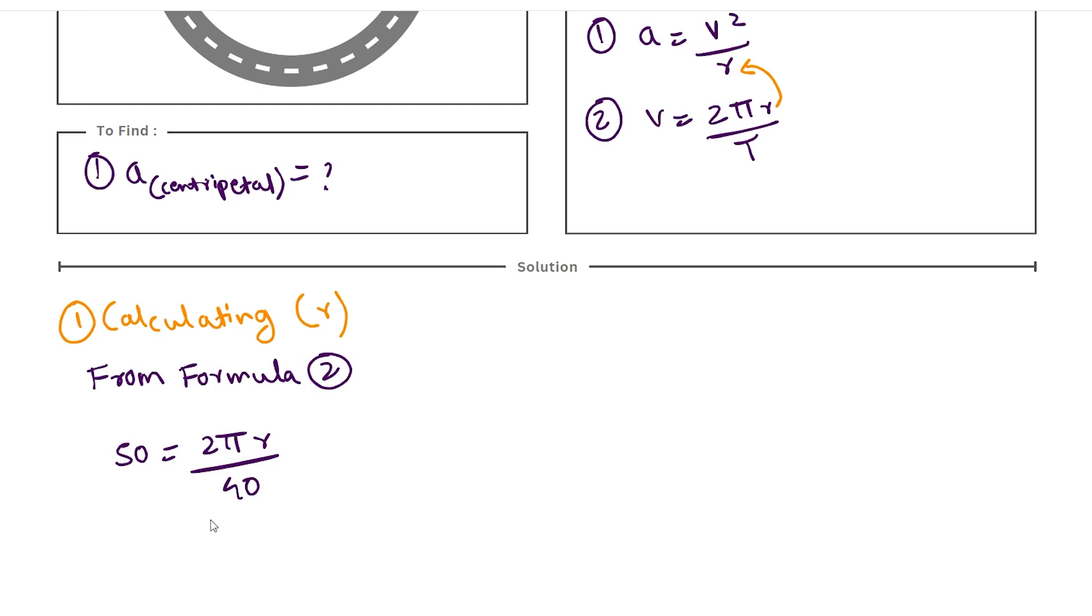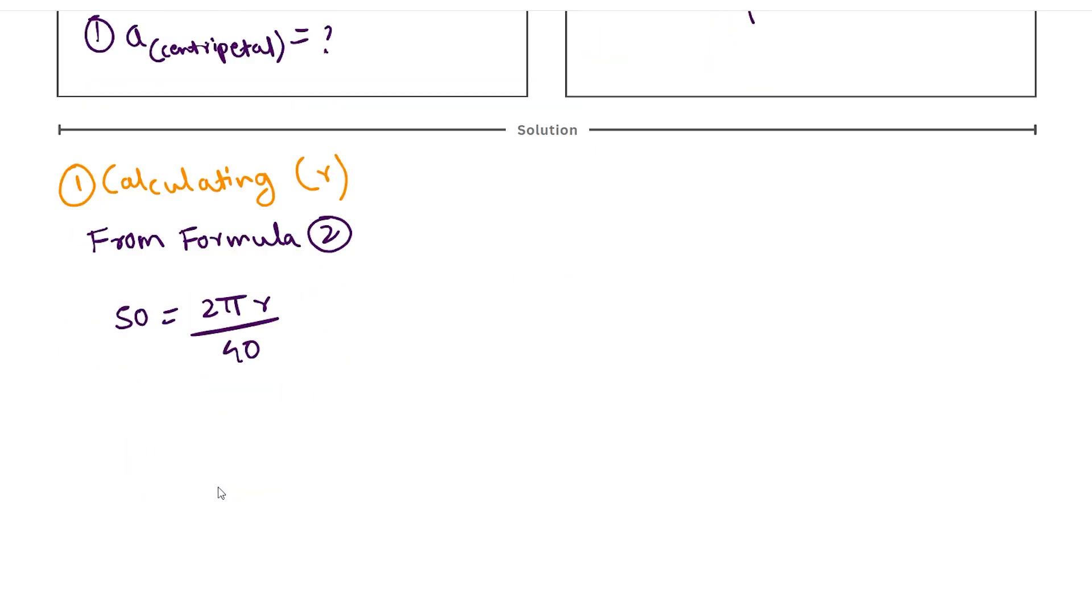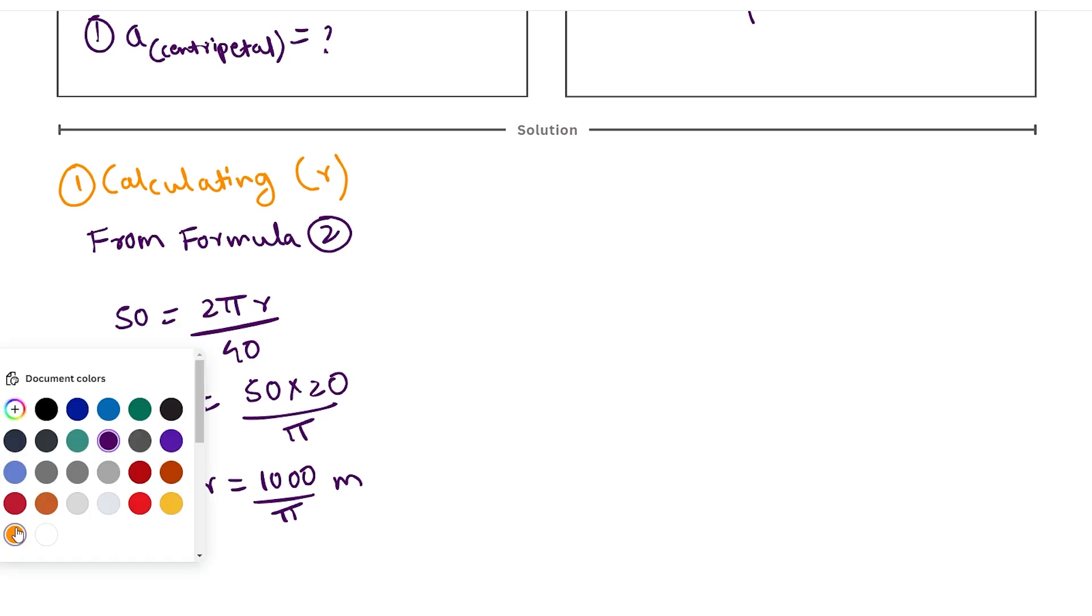So if we calculate this, we get r = (50 × 20) / π. Therefore, r = 1000/π meters. So now we know the value of r, and finding the value of acceleration should not be a big task because we actually know all the values.